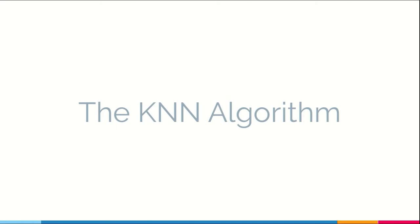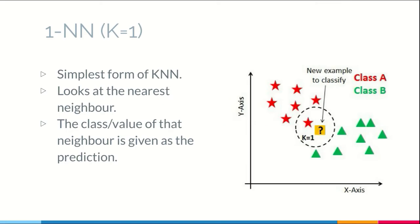Now the KNN algorithm. So the simplest form of the KNN algorithm is the one nearest neighbor form. So when a new data point is given, we look at the nearest neighbor that is the red one and we say that this has the same prediction as that one. Let us say that the red is lions and the green is tigers. So in this case, this will also be predicted as a lion.